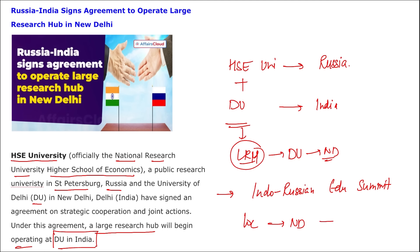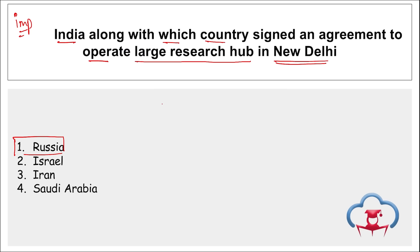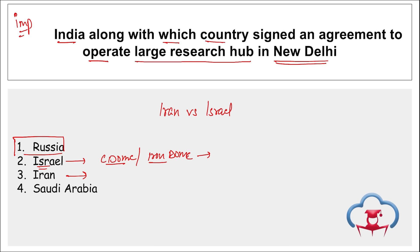The agreement was signed during the Indo-Russian Education Summit, which was held in New Delhi from 11th to 13th April. Recently, a conflict started between Iran and Israel. Israel's Iron Dome and Sea Dome systems help protect against incoming missiles and drone attacks. Iran fired multiple missiles towards Israel — the missiles fired were Fateh, Ghadr, and Sejjil.